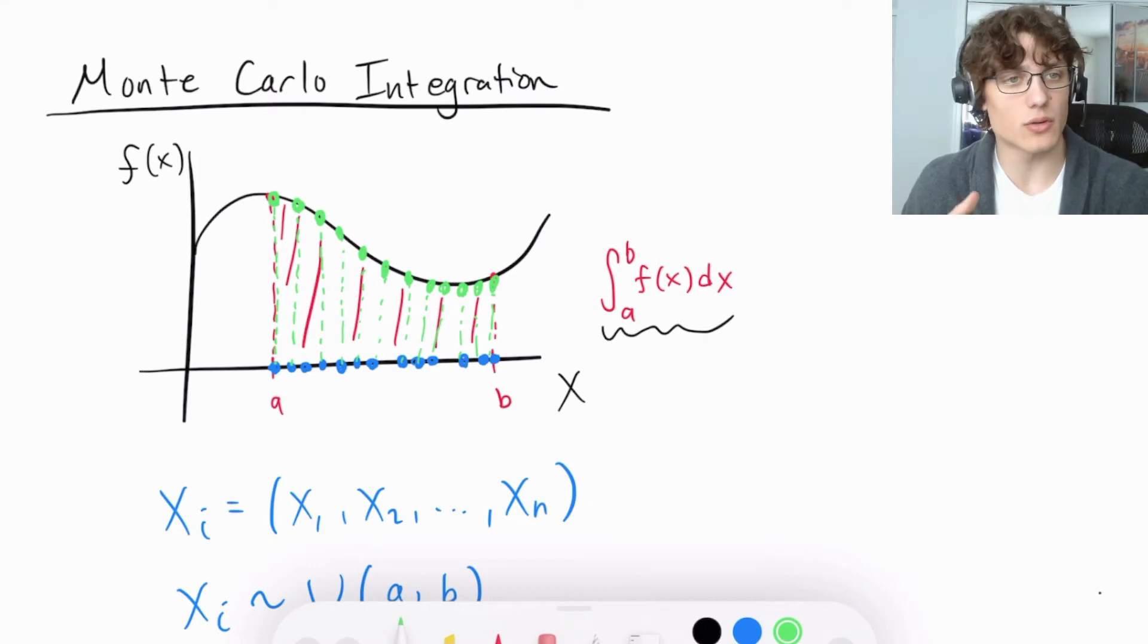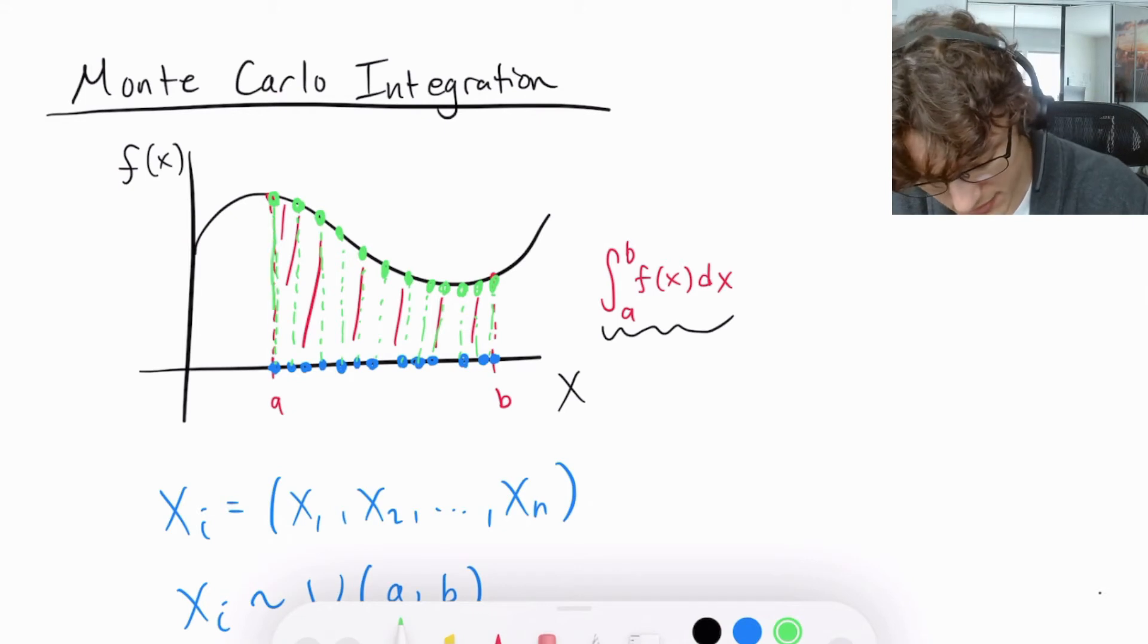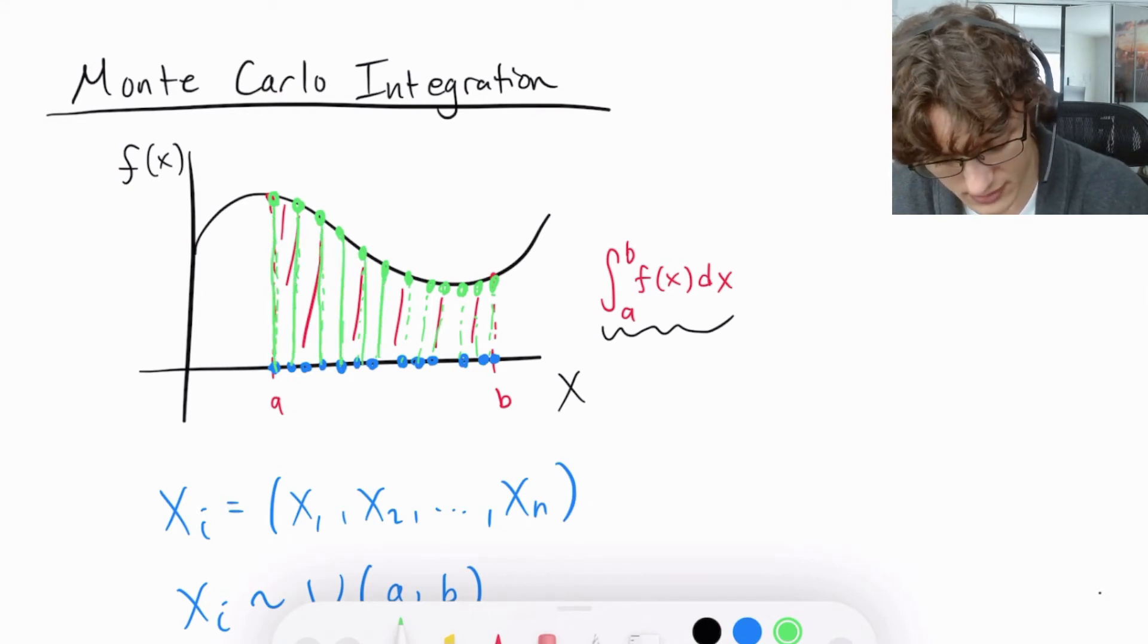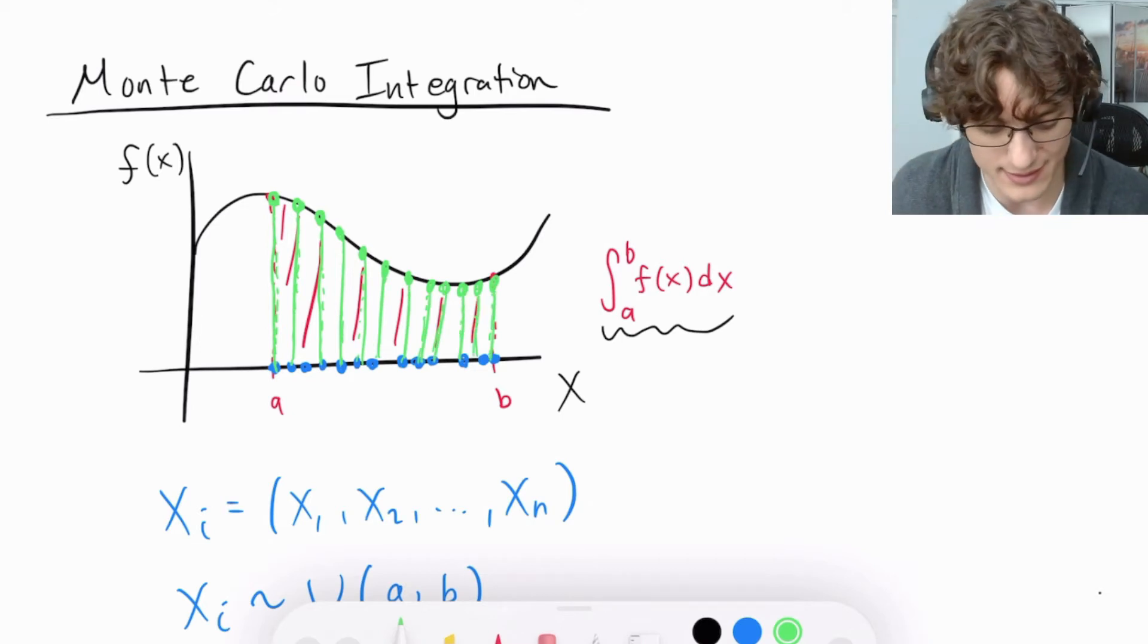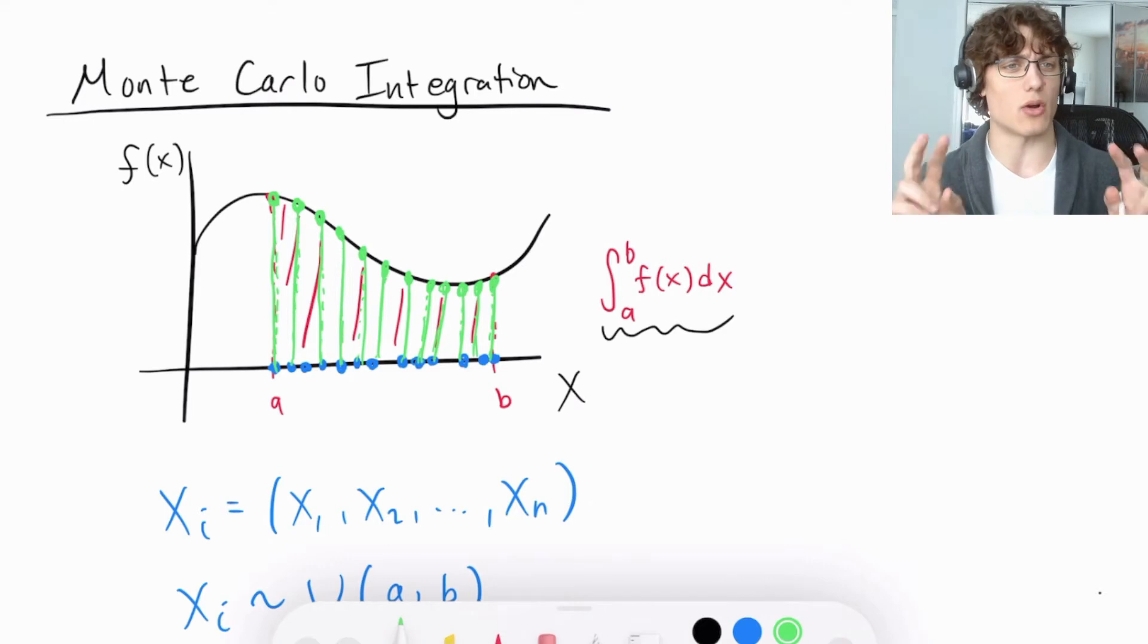Thinking in terms of our definite integral, if we look at this chart, we know what height is for each of these rectangles. We know it's just going to be these green lines corresponding to the function's value at each of the points randomly sampled on the x-axis. So what does that make our width?